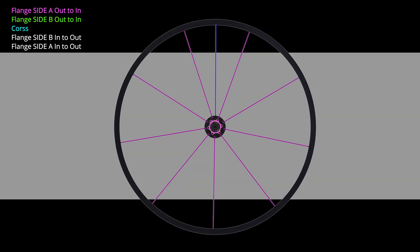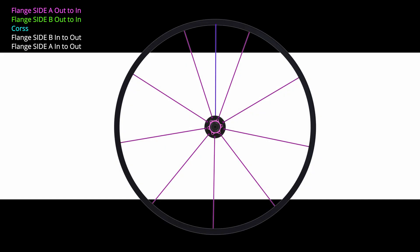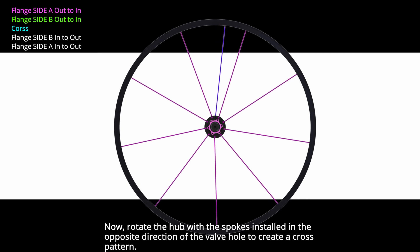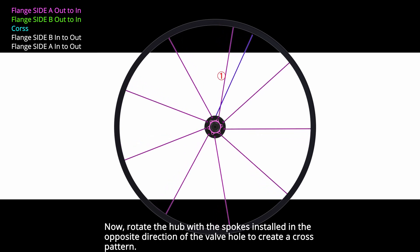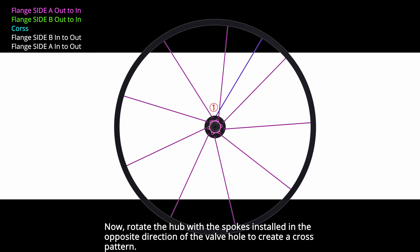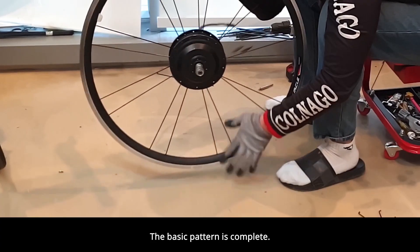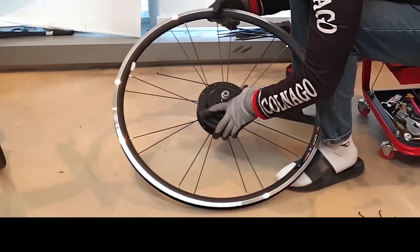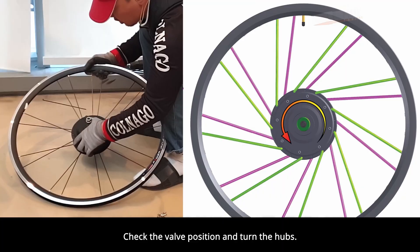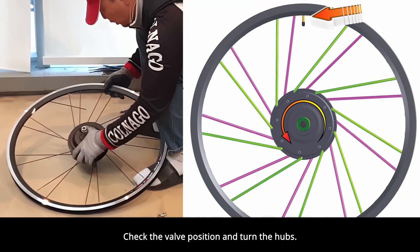Check the valve direction. Now, rotate the hub with the spokes installed in the opposite direction of the valve hole to create a cross pattern. The basic pattern is complete. Check the valve position and turn the hubs.